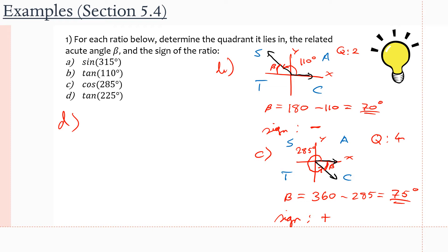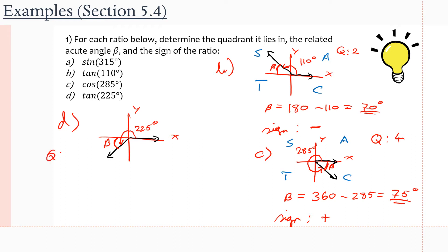Moving on to D, we have tan of 225 degrees. Again, we want to draw our Cartesian plane, our initial arm, and the angle. The principal angle is 225 degrees. Starting at the initial arm, we go past 90, past 180, but we stop somewhere in the third quadrant because we don't want to go past 270 degrees, the negative y-axis. So here is our principal angle, which is 225 degrees. And we are obviously in quadrant three.